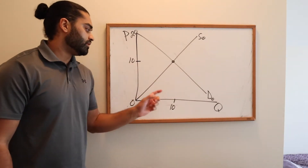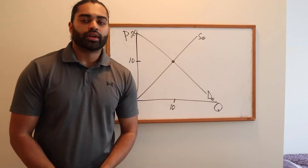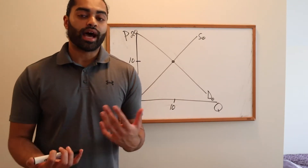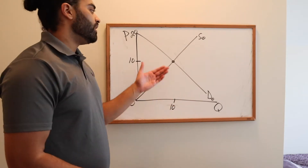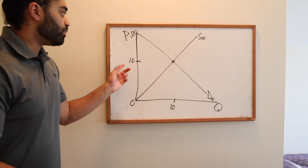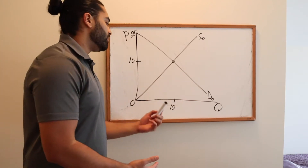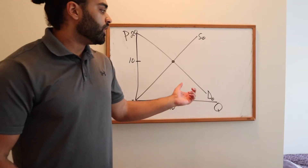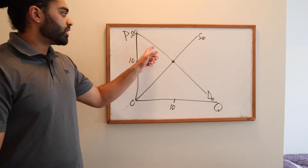From here you should be able to understand what the equilibrium price and quantity are — it's just the price and quantity corresponding with that point. Our equilibrium price is 10 and equilibrium quantity is 10. Something we look at when examining efficiency is total surplus — how much surplus is created at selling and producing at this quantity and price. When we look at our demand curve, we think of willingness to pay.